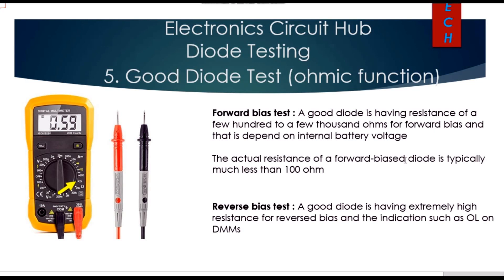For reverse bias in ohmic mode, a good diode shows extremely high resistance, and the DMM will display OL. So in the ohmic method: forward bias shows a few hundred to a few thousand ohms, and reverse bias shows OL.